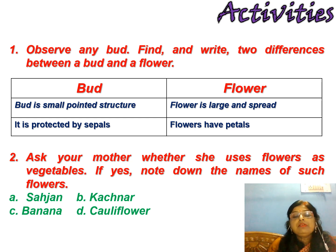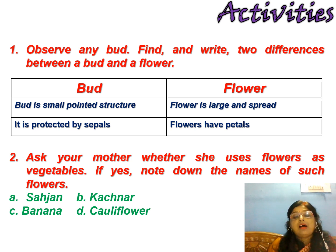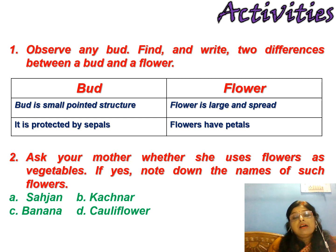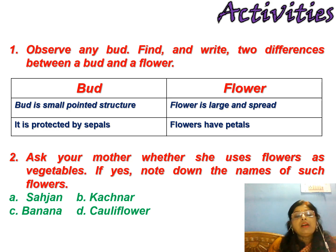The second question: ask your mother whether she uses flowers as vegetables. Some flowers are used as vegetables. If you go to the kitchen, you can ask your mother which flowers she uses as a vegetable. Examples of such flowers are sahajan, kachnar, banana flower, and cauliflower.